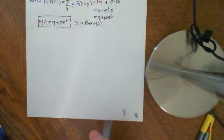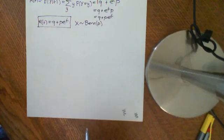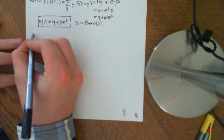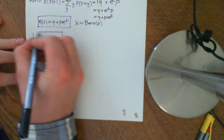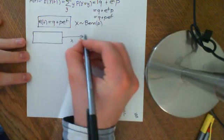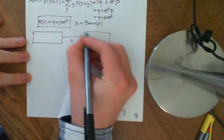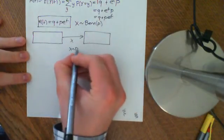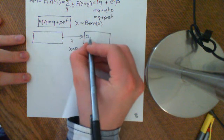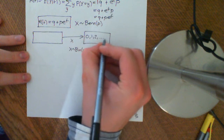In this video we're going to calculate the moment generating function for a binomial distribution — for a random variable which is distributed binomially with parameters n and p. So we have X distributed binomially as B(n,p), and that means it's mapping the abstract probability space onto the numbers 0, 1, 2, all the way up to n.